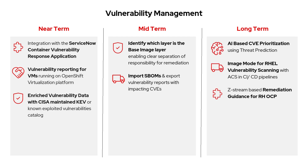In the long term, we're going to add AI-based CVE prioritization. ACS will generate an exploit score using an explainable AI model, helping teams focus on the most critical threats. We're also adding image mode for RHEL vulnerability scanning with ACS in CI/CD pipelines, so security checks are built into that development process. This will also allow ACS to detect vulnerabilities in RHEL-based images and application layers separately.